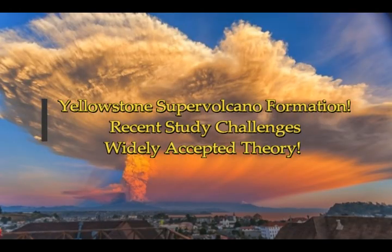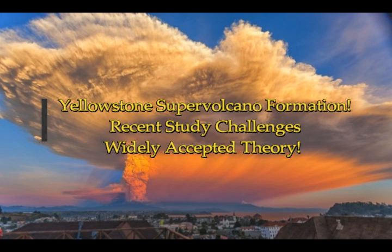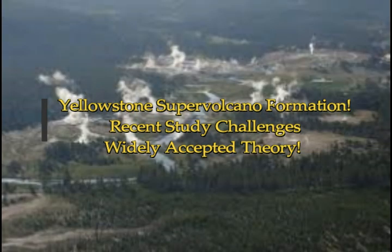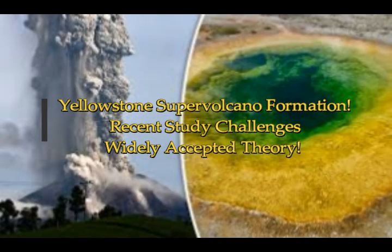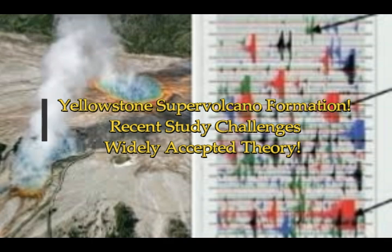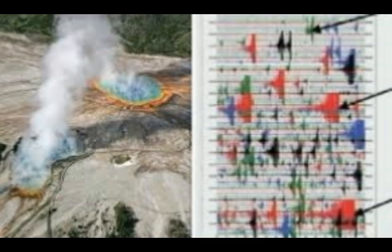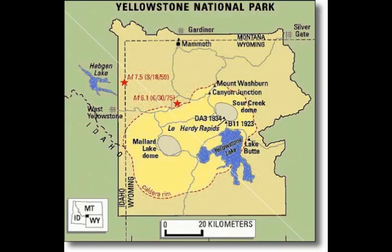Yellowstone supervolcano formation: a recent study challenges the widely accepted theory. This is on Science Daily by University of Illinois at Urbana-Champaign. Understanding the complex geological processes that form supervolcanoes could ultimately help geologists determine what triggers their eruptions. A new study using an advanced computer model cast doubt on previously held theories about the Yellowstone supervolcano's origins. Quote: 'Our model covered the entire history of Yellowstone's volcanic activities,' said G. Lee Jun Liu, geology professor at the University of Illinois.